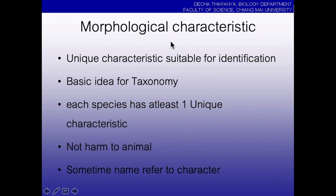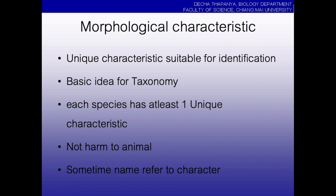Right now we have two main methods for identification. The first one is morphology and the second one is genetic. Morphology in identification is still important because the morphology of an animal is the unique characteristic that is suitable for identification.